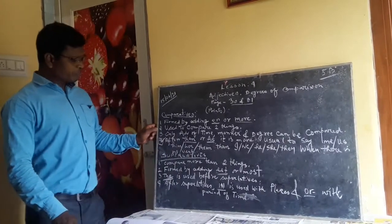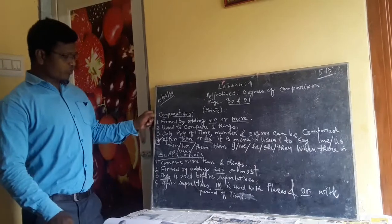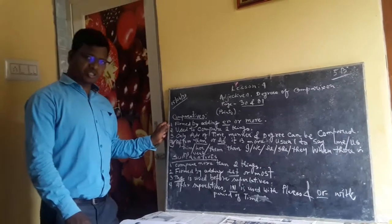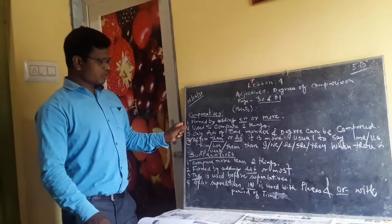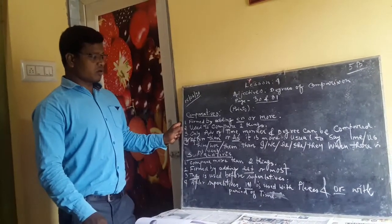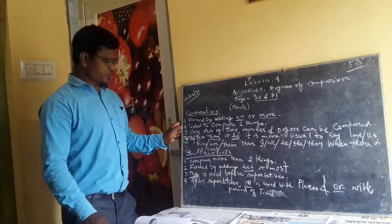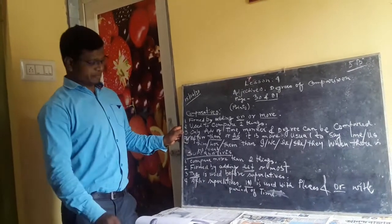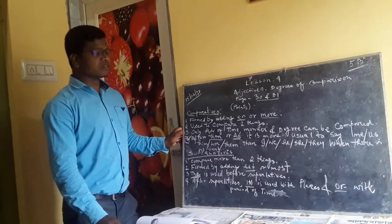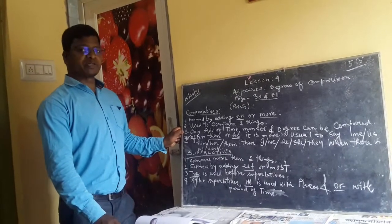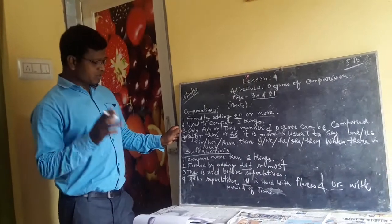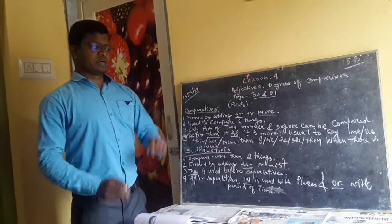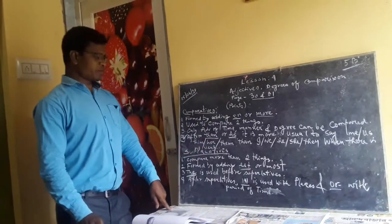Second point: comparative degrees are used to compare two things. So when we talk about the comparative degree, it always compares two things. Number three: only adverbs of time, manner, and degree can be compared. So remember — only adverbs of time, manner, and degree can be compared.